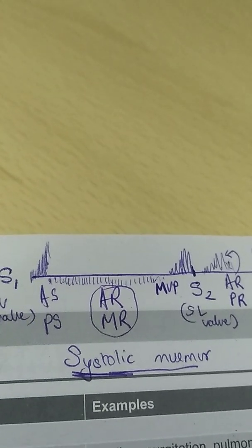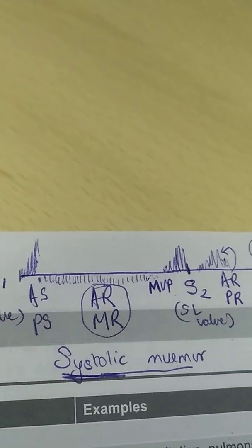The holosystolic murmur, that is throughout the systole, occurs when the aortic and mitral valve does not close, then blood keeps on oozing back into the ventricle. Holosystolic murmur is possible in aortic and mitral regurgitation.